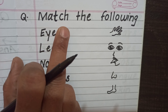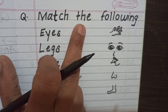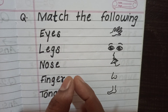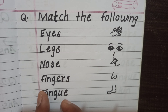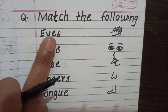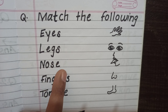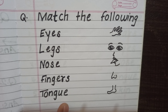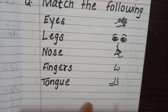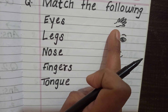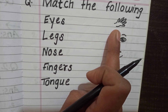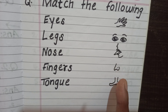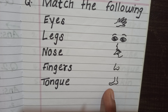Match the following. In the first row: Eyes — E-Y-E-S, Legs — L-E-G-S, Nose — N-O-S-E, Fingers — F-I-N-G-E-R-S, Tongue — T-O-N-G-U-E. In the second row, you can see pictures: hand with five fingers, eyes, tongue, nose, and foot. Start to match.